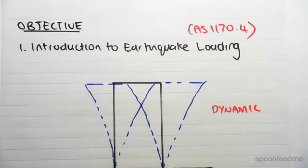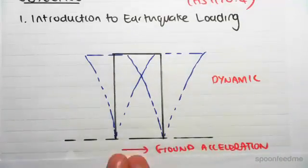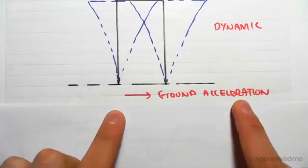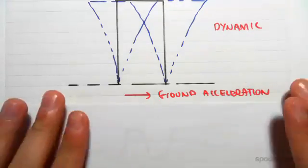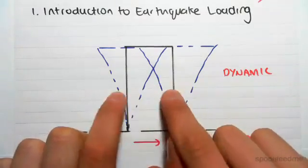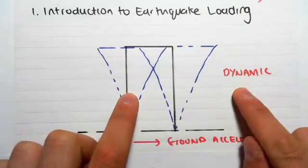So earthquake loading works like this: the ground beneath our structure is going to feel some type of acceleration. So the ground is going to accelerate beneath the structure, and what that does is it causes our structure to sway back and forward. And this is a typical dynamic type of loading.